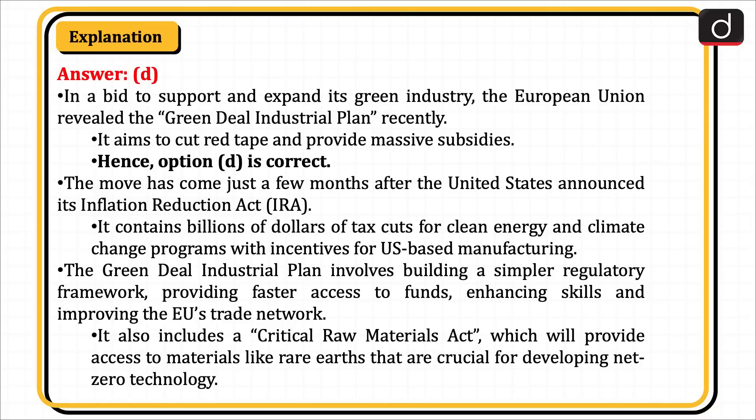The move came just a few months after the United States announced its Inflation Reduction Act or IRA, which contains billions of dollars of tax cuts for clean energy and climate change programs with incentives for US-based manufacturing. The Green Deal Industrial Plan involves building a simpler regulatory framework, providing faster access to funds, enhancing skills, and improving the EU's trade network. It also includes a Critical Raw Materials Act, which will provide access to materials like rare earths that are crucial for developing net-zero technology.